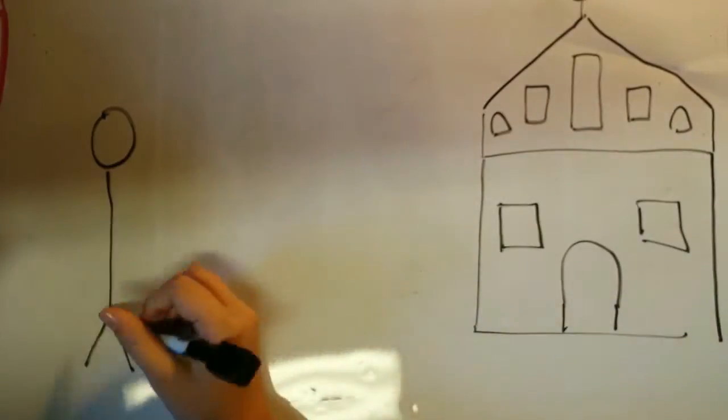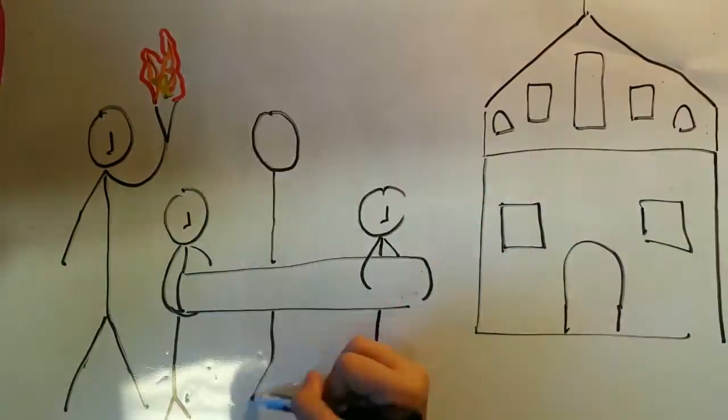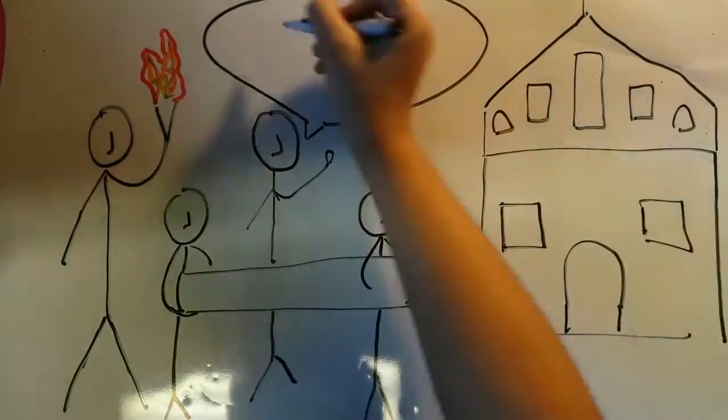In 1566, Protestant militants tried to steal the piece with the intent of burning it. Catholic guards saved the piece by disassembling it and hiding it away, which left the piece unharmed.